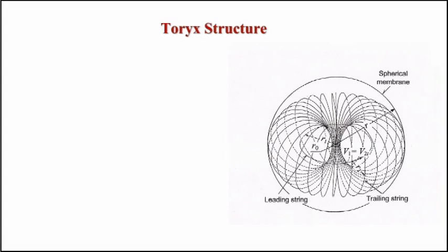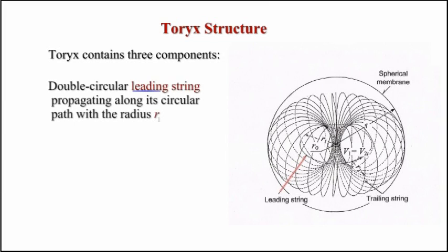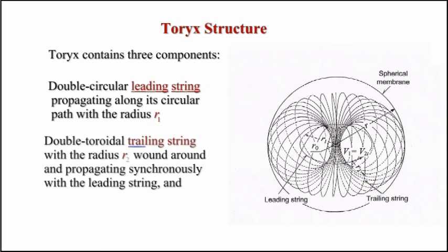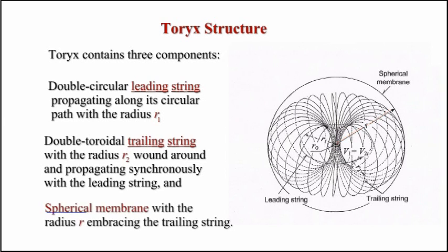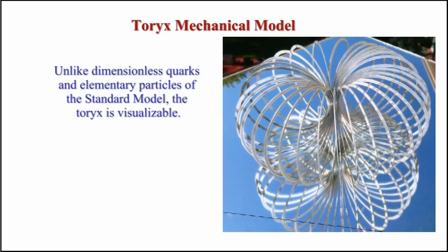The toreses contain three components: a double circular leading string propagating along its circular path with radius R1; a double toroidal trailing string with radius R2, wound around and propagating synchronously with the leading string; and a spherical membrane with radius R, embracing the trailing string. Unlike dimensionless quarks and elementary particles of the standard model, the toreses are visualizable.